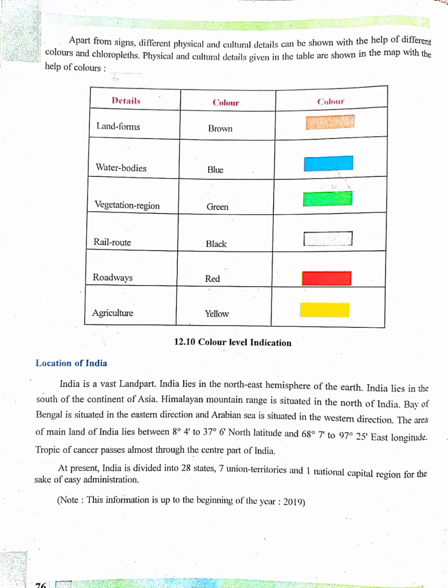The Tropic of Cancer passes almost through the center part of India. At present, India is divided into 28 states, 7 union territories, and 1 national capital region for the sake of easy administration. Note: this information is up to the beginning of the year 2019.